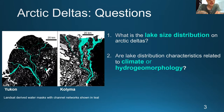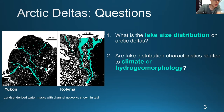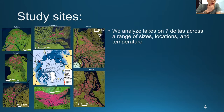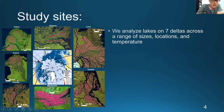The two questions we're addressing today are: what is the lake size distribution, and are lake distribution characteristics related to climate or hydrogeomorphology? The seven deltas we studied are pictured here ringing the Arctic Circle, going from the McKenzie in a circle all the way down to the NSA.